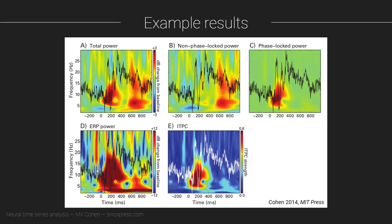I've also computed the time-frequency power of the ERP itself. The thing is, the TF power of the ERP is often difficult to interpret and very difficult to baseline-normalize, because power at most frequencies tends to be quite flat in the pre-stimulus baseline — particularly when you have a large number of trials. In general, I don't recommend computing TF power of the ERP, because it doesn't contain much information you wouldn't get just by looking at the ERP itself.